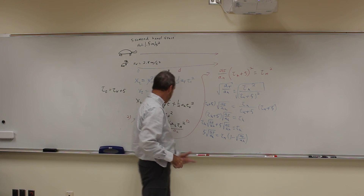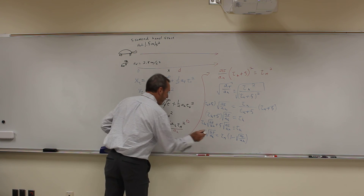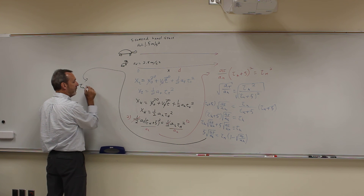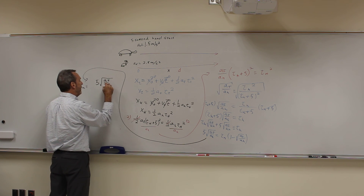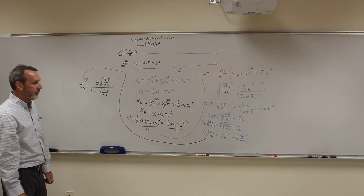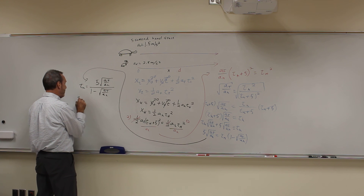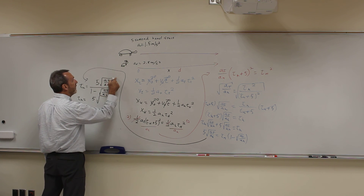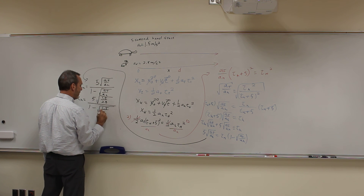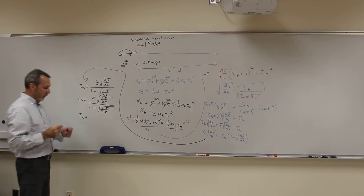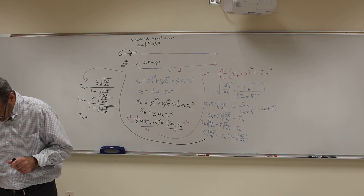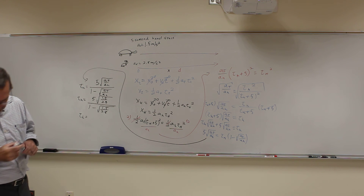Dividing both sides to isolate t-hare, I get: t-hare equals 5 times the square root of a-tortoise over a-hare, all over (1 minus the square root of a-tortoise over a-hare). Plugging in the numbers — 1.5 over 2.8 — the time for the hare is equal to 5 times the square root of 1.5 over 2.8, divided by (1 minus the square root of 1.5 over 2.8), which gives t-hare equals 13.65 seconds.